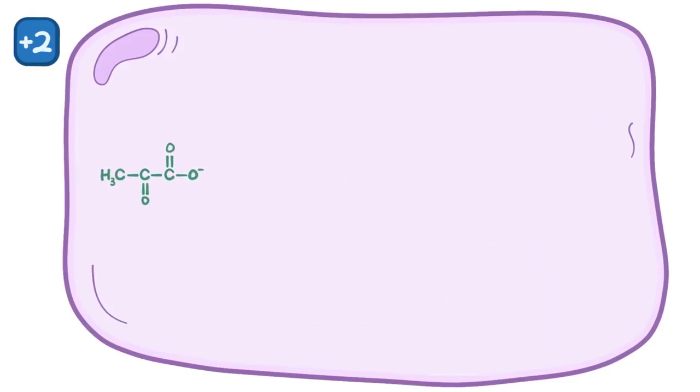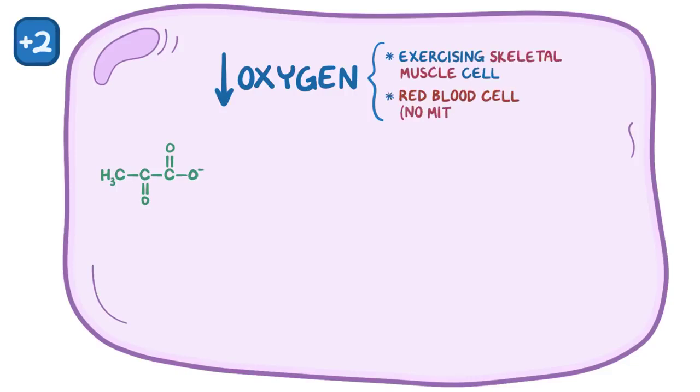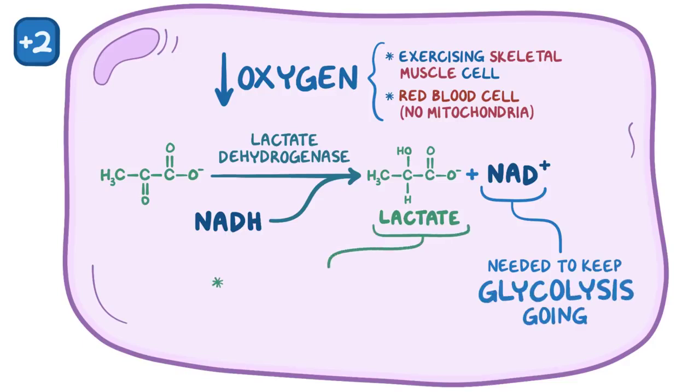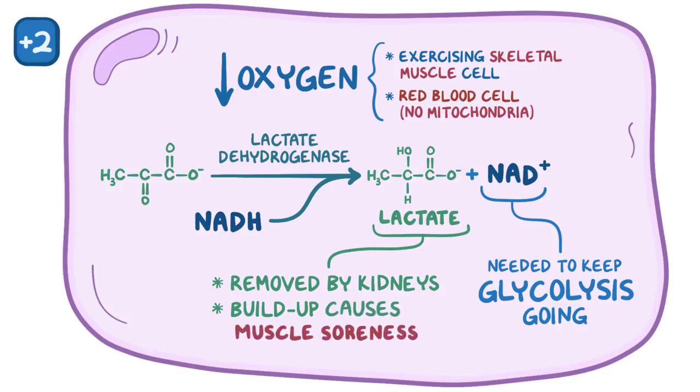Now some cells don't have access to sufficient oxygen, like an exercising skeletal muscle cell or a red blood cell that lacks mitochondria. In those situations, the cell can use the enzyme lactate dehydrogenase to remove hydrogen from an NADH molecule and give it to pyruvate, making lactate and NAD+ as a byproduct. NAD+ is crucial because it's needed to work with G3P dehydrogenase and keep glycolysis going. Now, normally lactate is removed from our blood by the kidneys, but if local lactate levels rise too quickly, it can sometimes build up, and this is what's responsible for some of the muscle soreness you develop when you exercise.